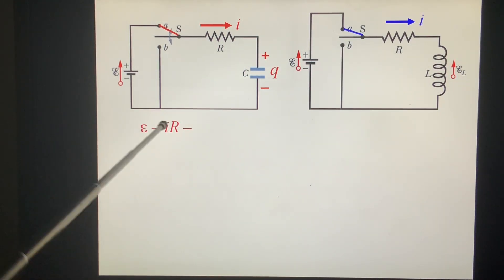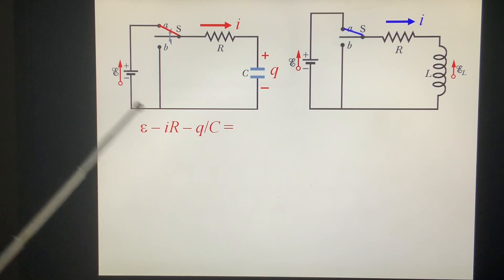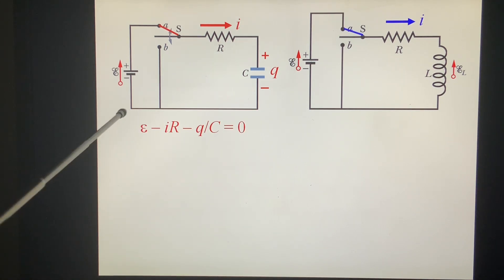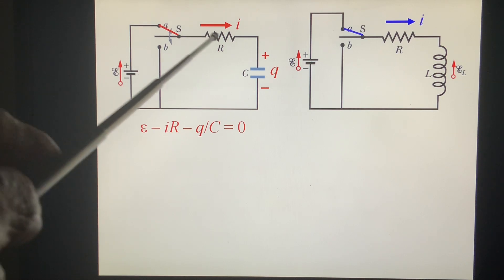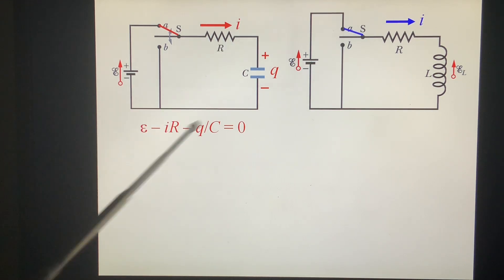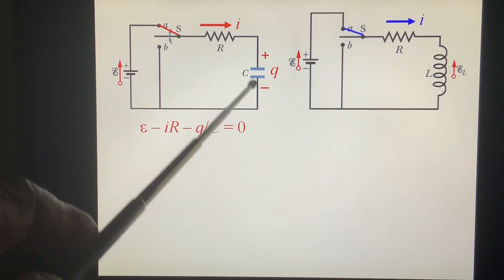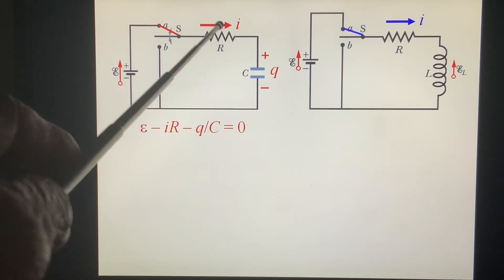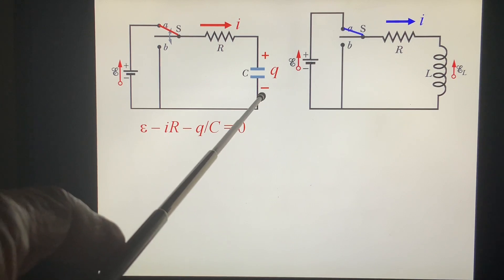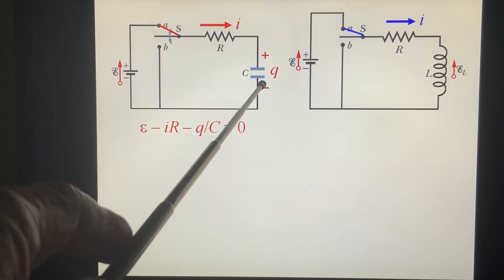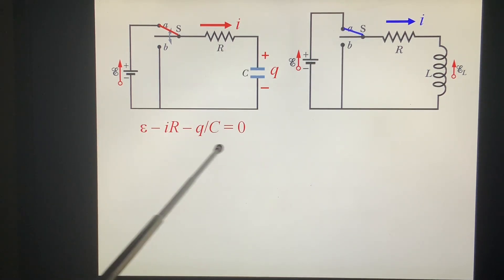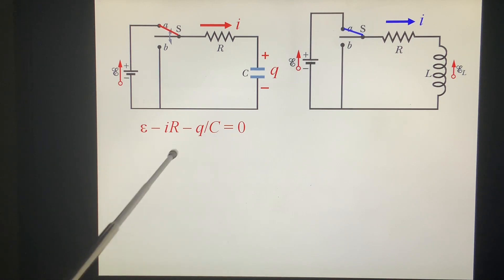Now we look at the related equation. From here: epsilon, positive, minus IR — this is negative — minus V, where V is Q over C. This is the differential equation for this circuit.